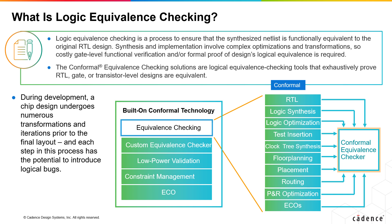Equivalence checking is required at numerous stages because at each stage certain transformations and iterations happen in terms of logic synthesis, optimization, test insertion, clock synthesis, floor planning, etc. We need to make sure whatever changes are done at each stage, it is not functionally affecting the design, so you need to do the logic equivalence checking.